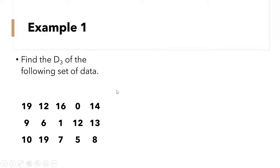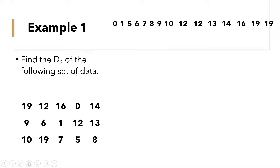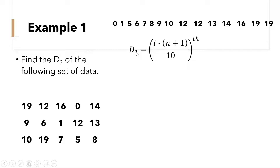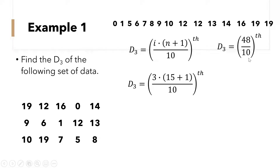Let's have example number one: find the decile 3 of the following set of data. The first thing you need to do is arrange the data in ascending order. Then, using the formula for finding the decile, since we are looking for decile 3, our i is 3. So d sub 3 is equal to 3 times 15 (the number of samples) plus 1, over 10. So 15 plus 1 is 16, times 3, that is 48 over 10, which gives decile 3 equals 4.8.